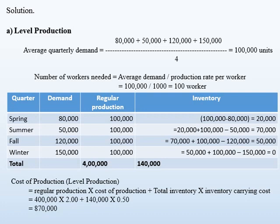We calculate the total cost of production, which is regular production quantity multiplied by cost of production, plus total inventory carried multiplied by inventory carrying cost. That is 400,000 multiplied by $2, plus 140,000 multiplied by $0.50. Thus we get the total cost as $870,000.